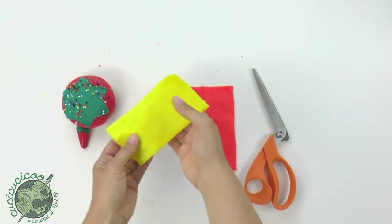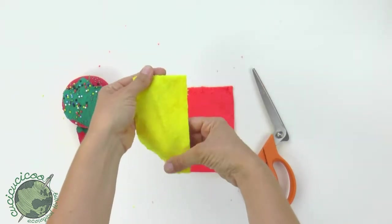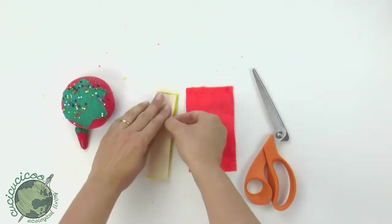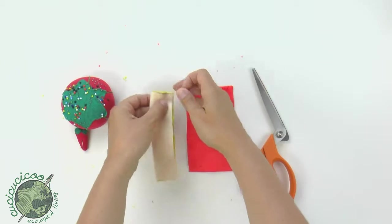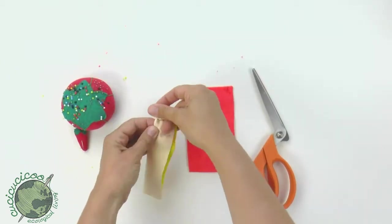If your fabric has a nap like mine does, which means the fuzziness goes in a direction, you want that so that it goes down. Fold it in half like this and pin across the top and then the long open side.